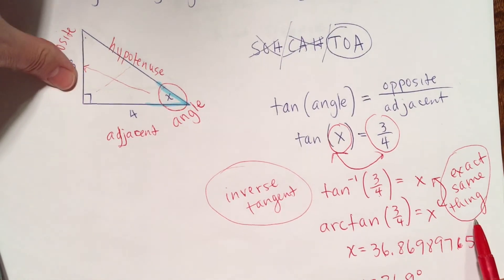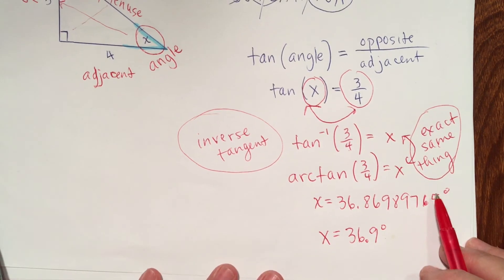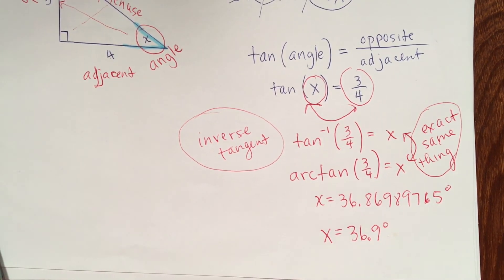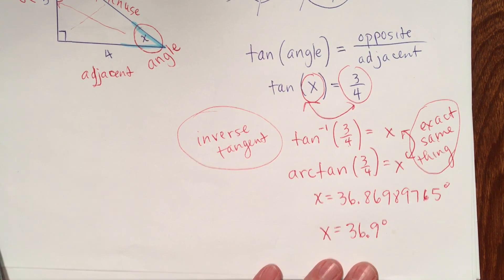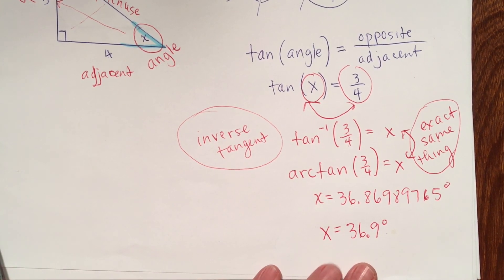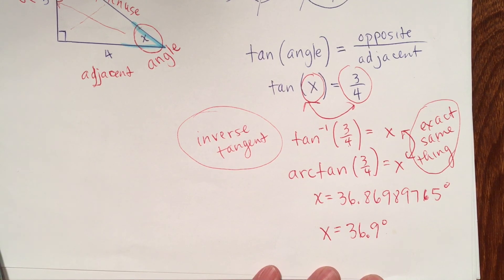If you don't put the degree mark, then you're telling the person looking at your paper that the units are something else. And that's something else I talked about in a previous video, that something else would be radians. Now, we're not working in radians right now. You'll see radians when you take trigonometry. So, you don't need to worry about what radians are. But, again, if you don't put the degree mark, you're telling the person reading the paper it's something else.